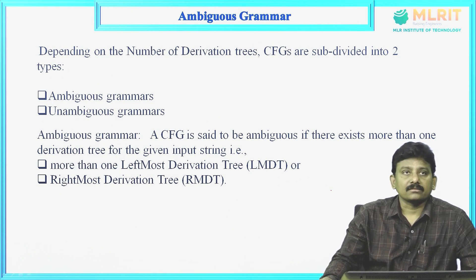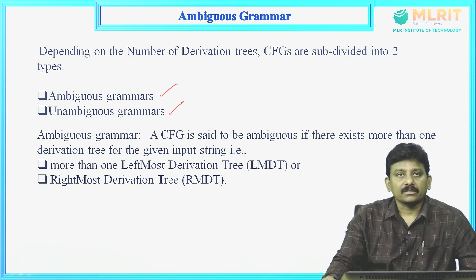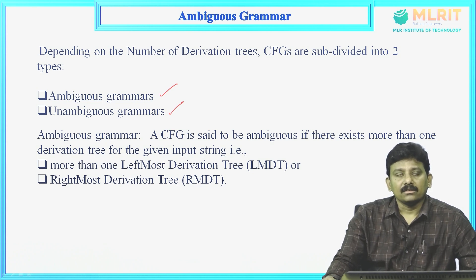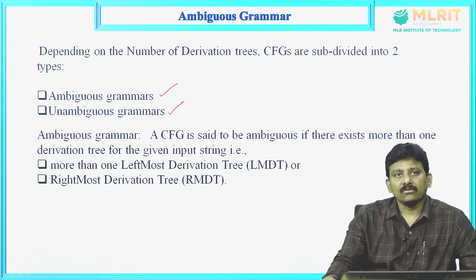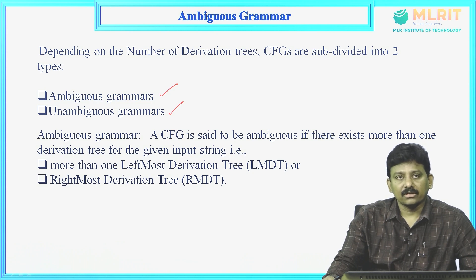Next topic is ambiguous grammar. Depending on the number of derivation trees, context-free grammars are divided into two types: ambiguous grammar and unambiguous grammar. A CFG is said to be ambiguous if there exists more than one derivation tree for the same input string — that is, if you can construct more than one leftmost derivation or more than one rightmost derivation for the same string, that grammar is called ambiguous grammar.